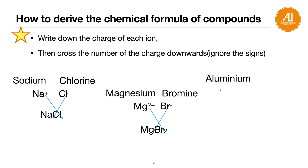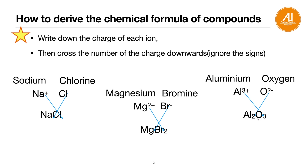One more example: aluminium and oxygen. Aluminium, if you check your periodic table, is group 3, so it's Al3+. Oxygen is group 6, so it's O2-. When you group them together it will be AlO. Cross the 2 down to aluminium and cross the 3 down to oxygen. So the formula for aluminium oxide will be Al2O3. With this technique you can derive any chemical formula of a compound.